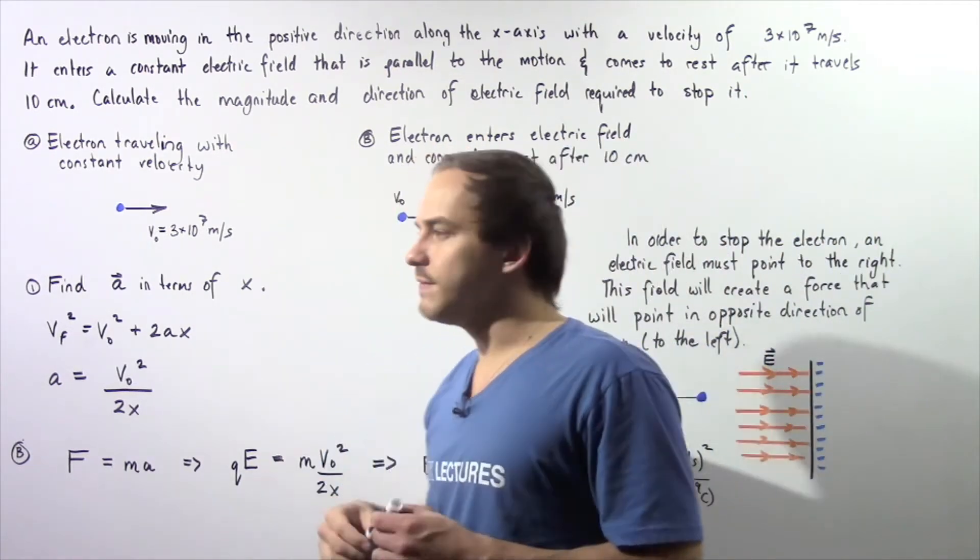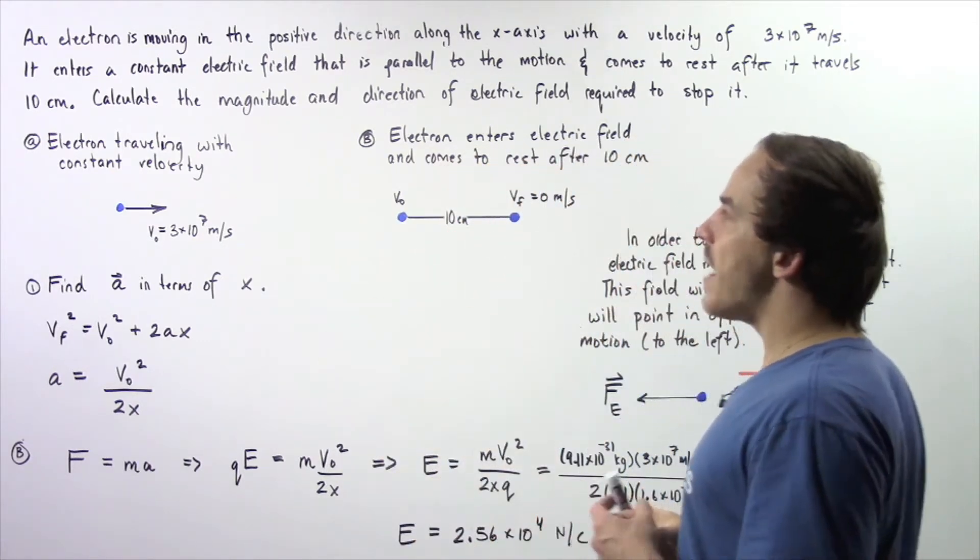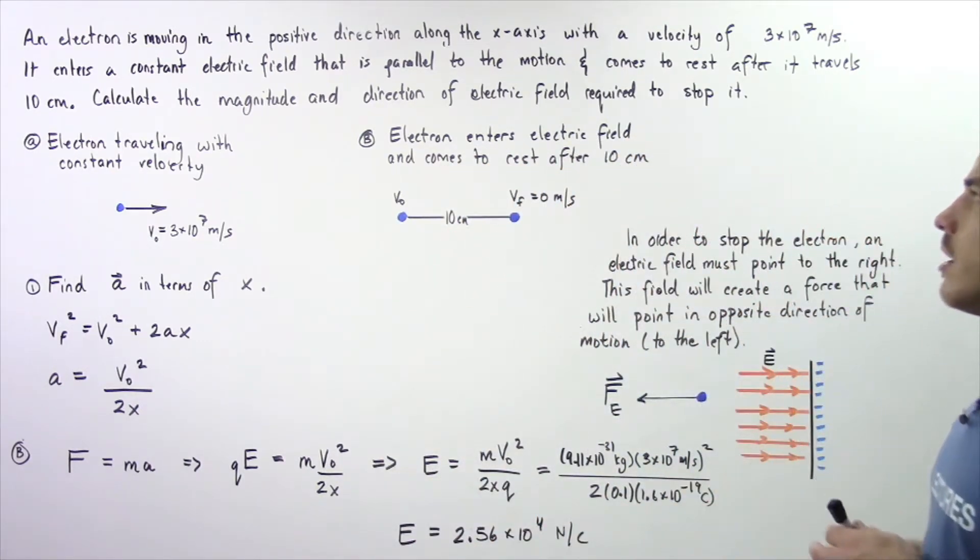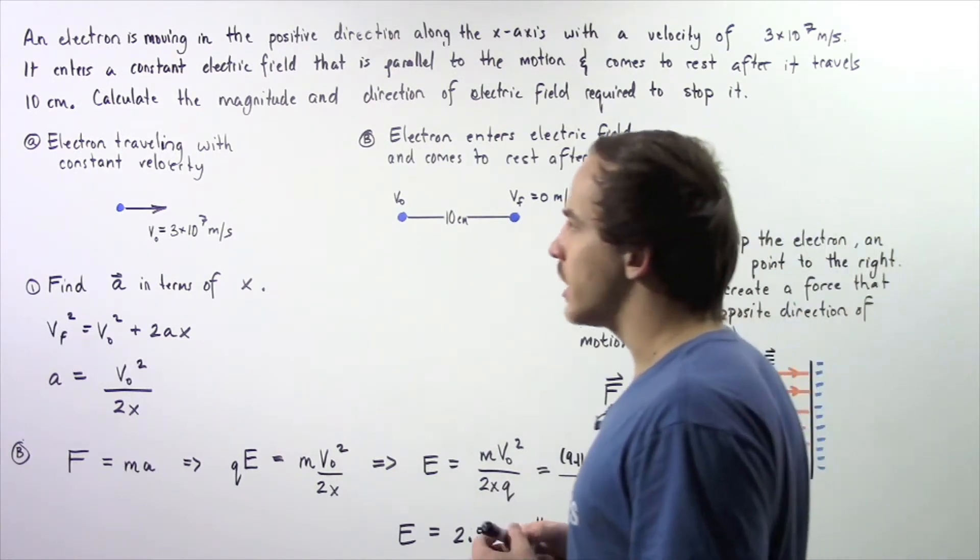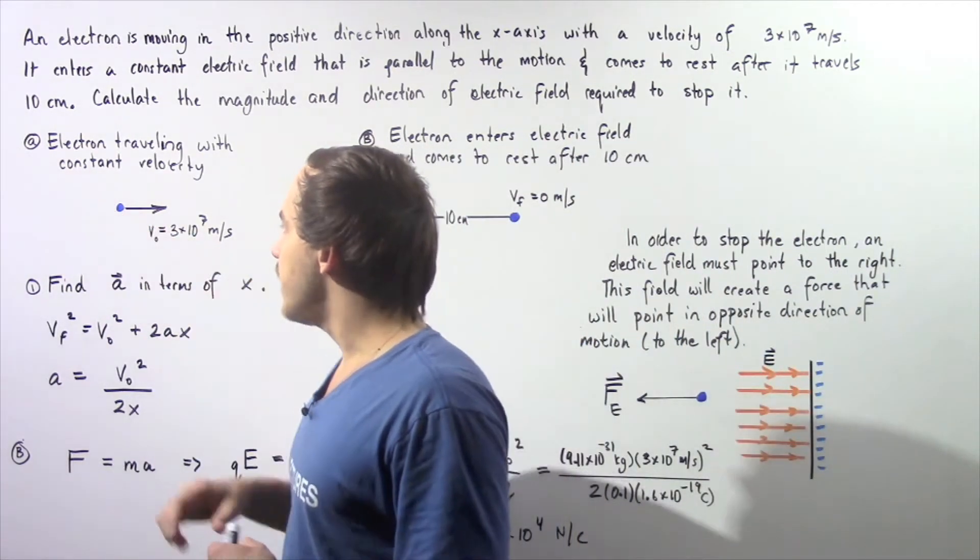Using this information, calculate the magnitude and direction of the electric field required to stop our electron. Let's begin by looking at diagram A.